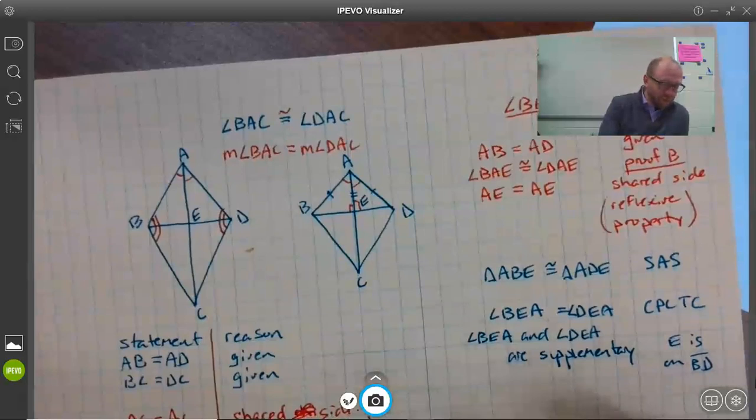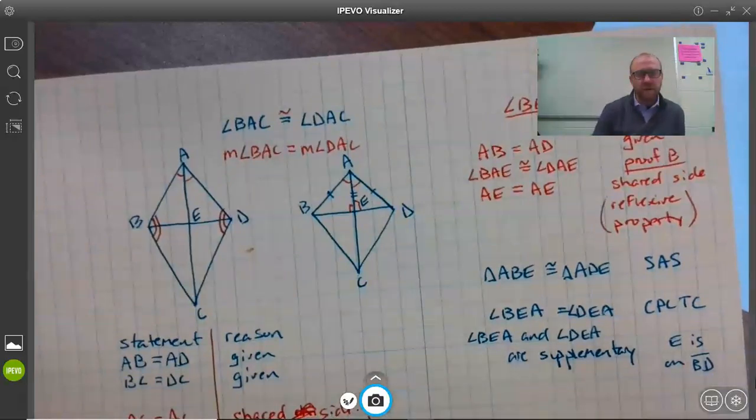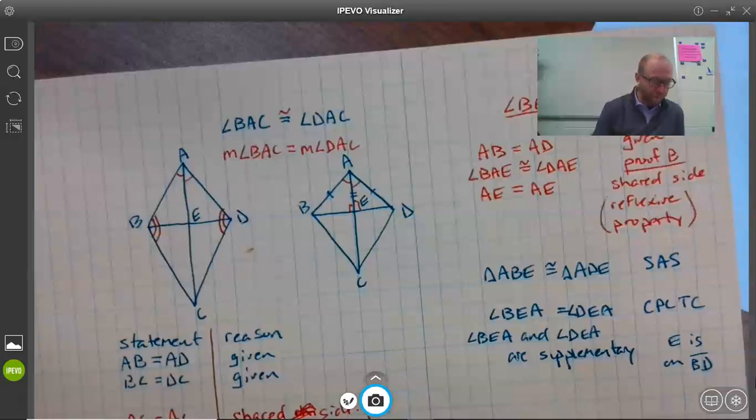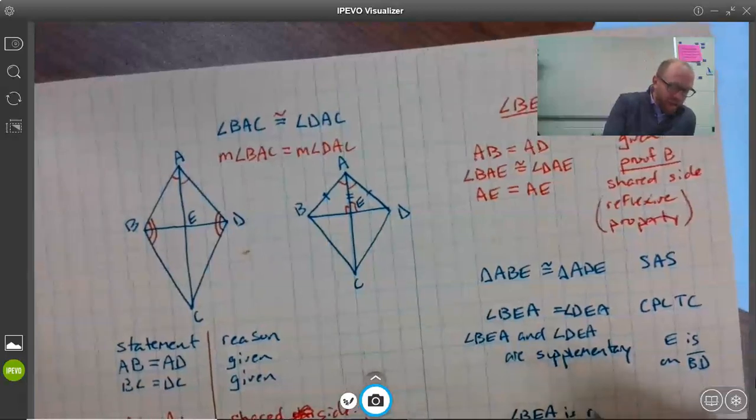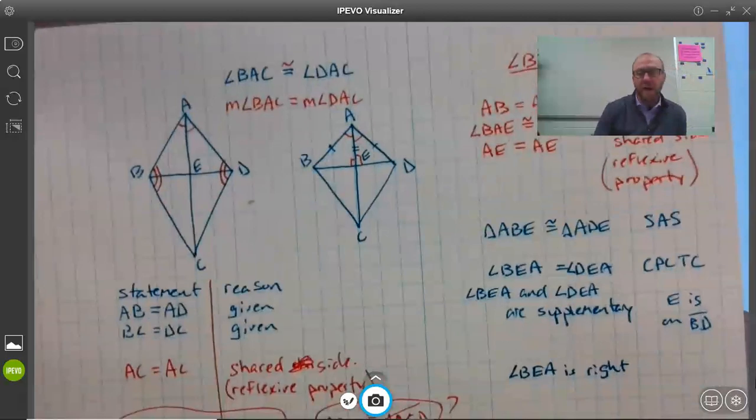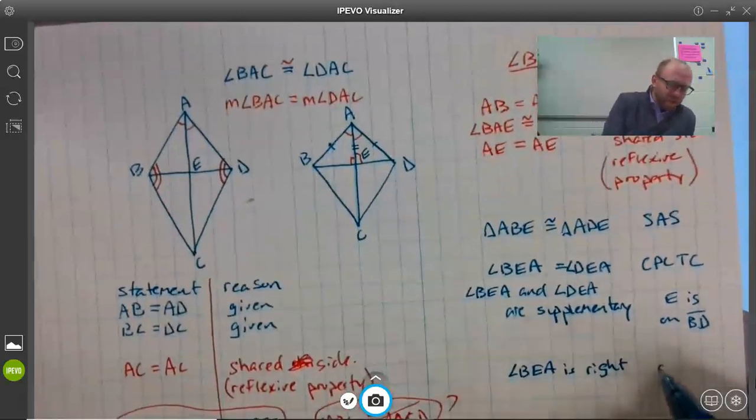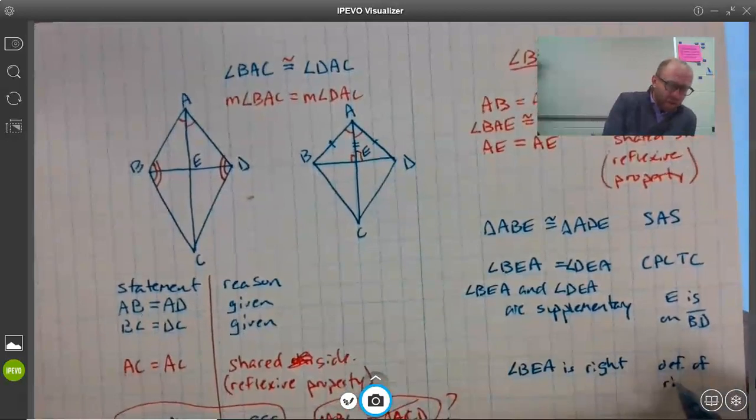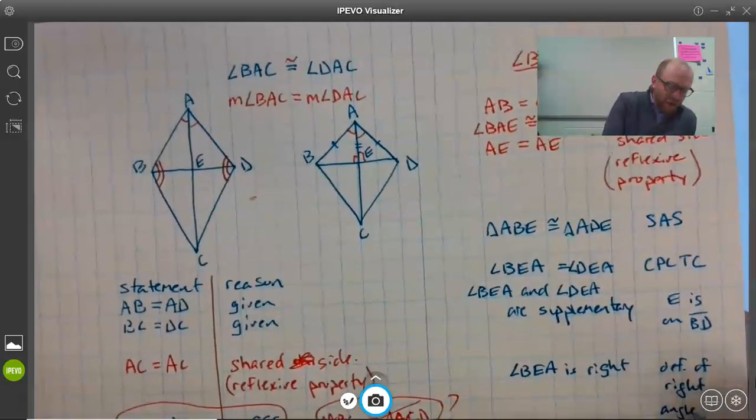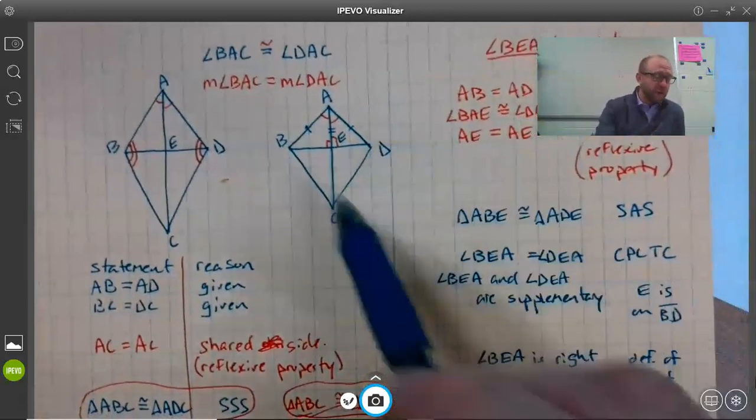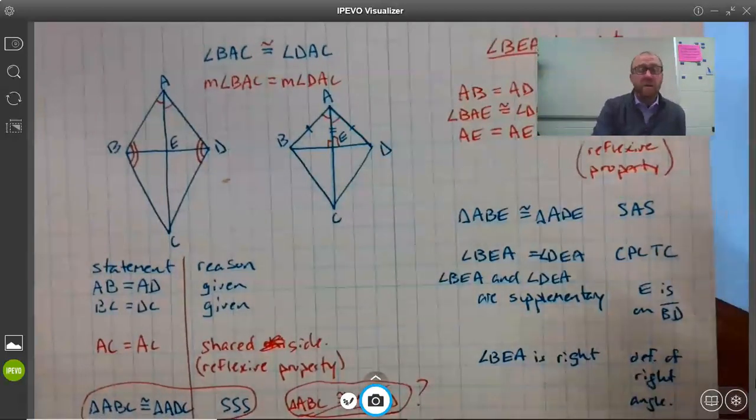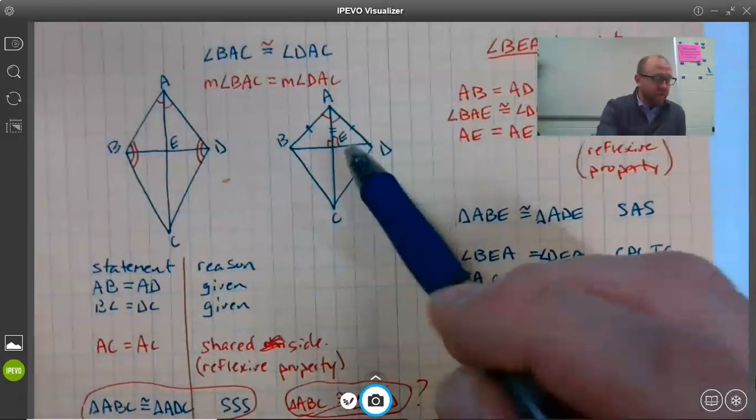Next, we know they're supplementary, and here's our big leap. We know, because of all this, that angle BEA is a right angle. They give definition of right angle as their reason, which is a huge leap. Many people would break this down into smaller steps. They'd say BEA and DEA are supplementary, which means they add up to 180 degrees—that's the definition of supplementary angles.